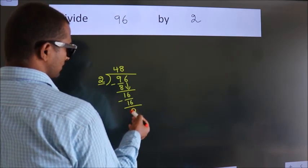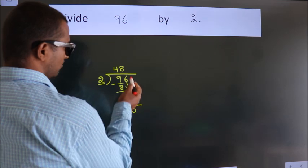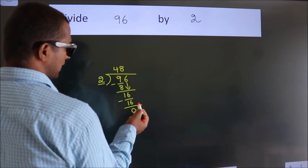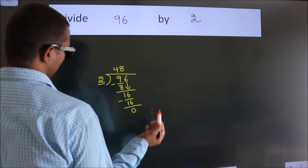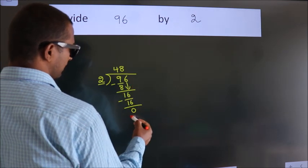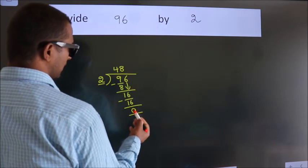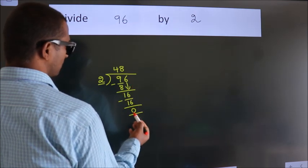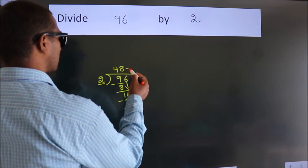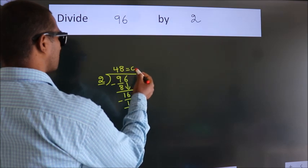After this, there are no more numbers to bring down, and we got remainder 0. So this is our quotient.